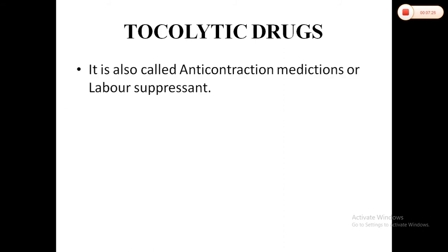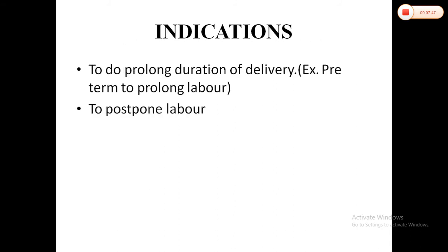The next drug category has the opposite action to oxytocics. Oxytocin drugs cause contraction, while tocolytic drugs cause relaxation of the uterine muscle. Tocolytics are also called anti-contraction medication or labor suppressants. Indication: to prolong the duration of delivery, for example, in preterm labor — if the mother is having true labor pain before the term, we administer tocolytics to stop that pain.